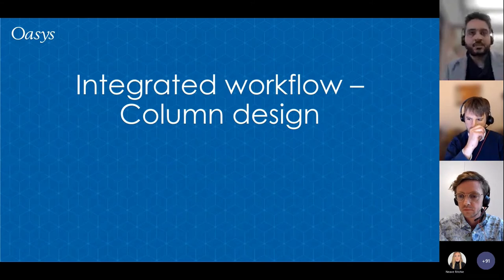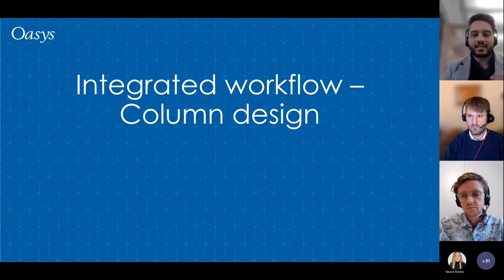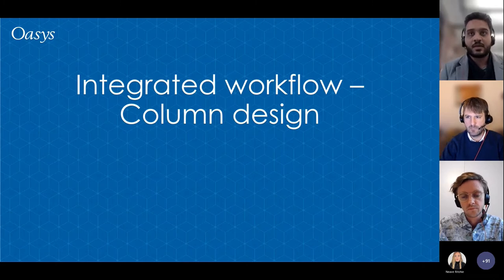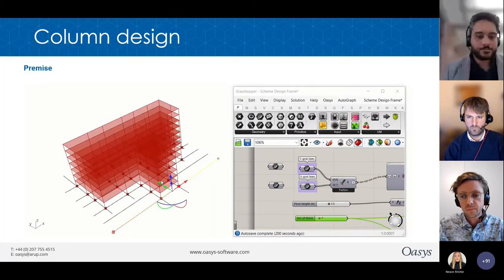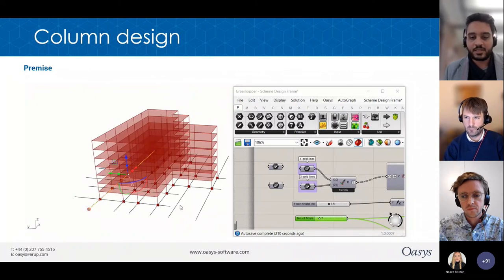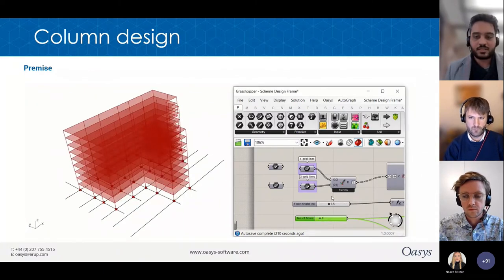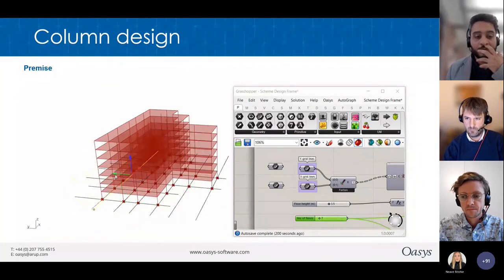That was a quick overview of the plugins. Now let's start diving into integrated workflows. We'll start with something simple: a column design script. The premise is a parametric model where we're changing the grids, number of floors, and floor heights. We want to set up an integrated workflow to do a global analysis and cross-section design of the columns.